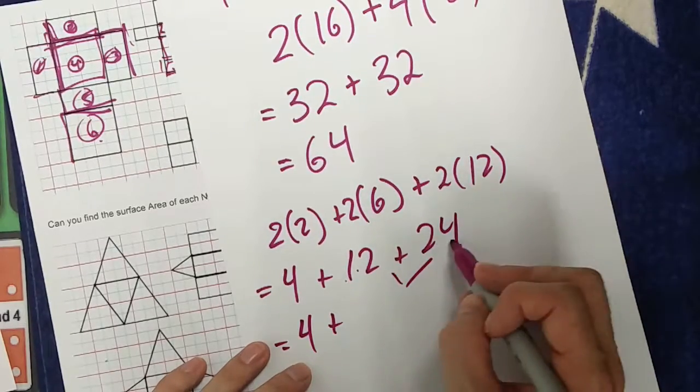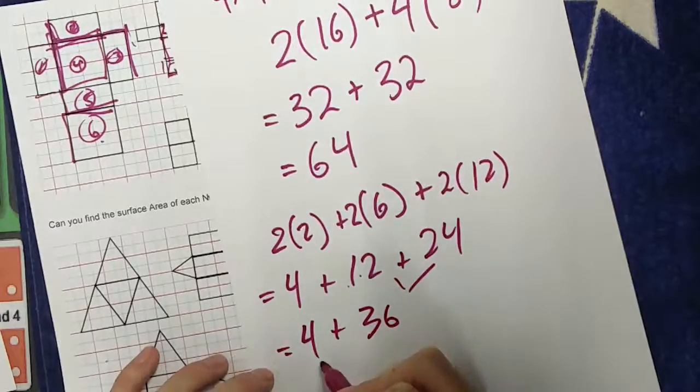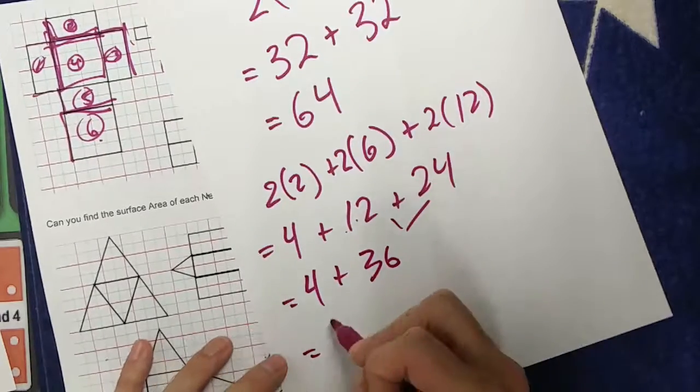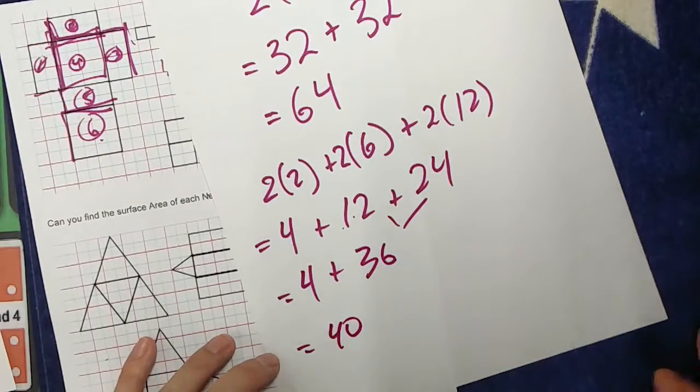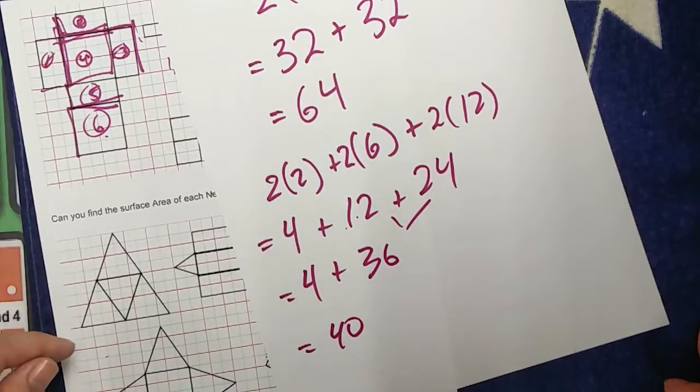So my 10s together, 30, plus my 1s together is 6. So 36. And then add those 2 together up, and I have a total of 40. And there you go. Just found the surface area of those 2 shapes.